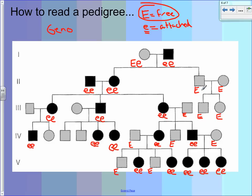This person is big E, little e because they got their big E from mom, but all dad has to give is a little e. Now let's look at their kids. This is problematic because we know both dad and mom have a big E, but we don't know where this big E came from. We also don't know mom's second allele — she could be either big E, big E or big E, little e. There's not enough information to tell.